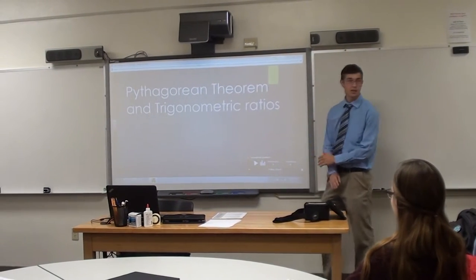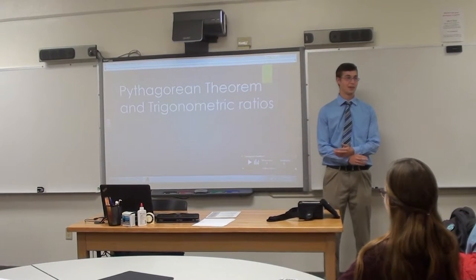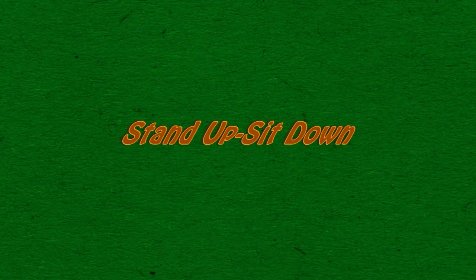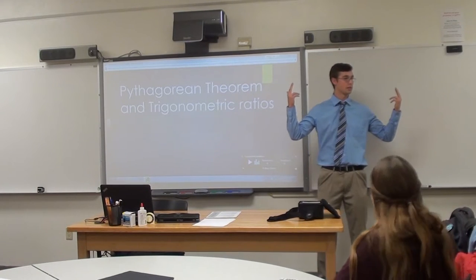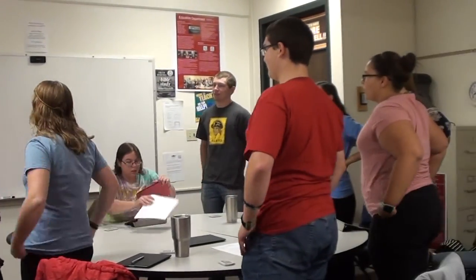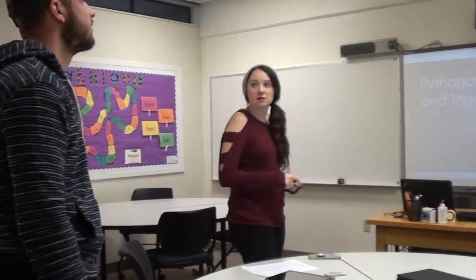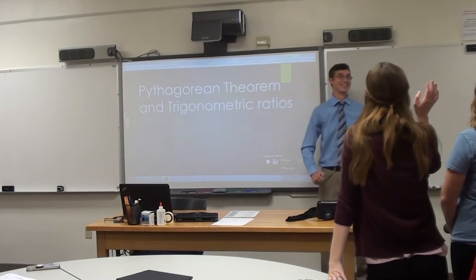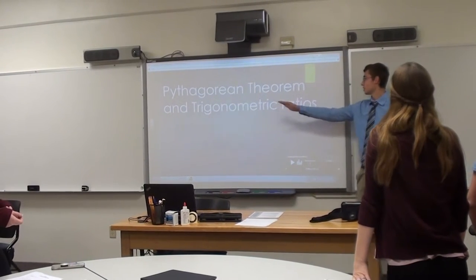Now, I know we're just starting to get into this stuff, but have any of you guys ever heard the word SOHCAHTOA? Has anyone ever heard of that? Can everyone stand up real quick please? Raise your hand if you know. What does SO mean in SOHCAHTOA? Sine. Yes. What does CA mean? Cosine. Yes. Tangent. Exactly. So there you go — those three right there are the trigonometric ratios.